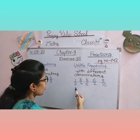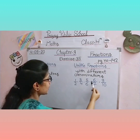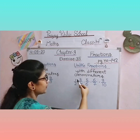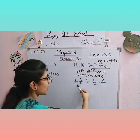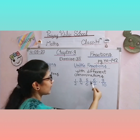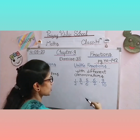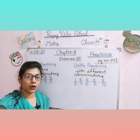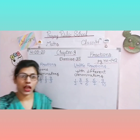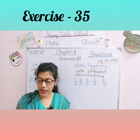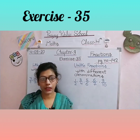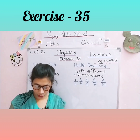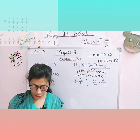Unlike fractions have different denominators. For example: 1/2, 3/4, 5/6, 6/7, 9/10 — the numerators and denominators both are different. Yeh humara unlike fraction ka example hai. Toh like fractions aur unlike fractions pe based aapki maths book ki exercise number 35 hai — open your maths book, exercise number 35 on page number 142.